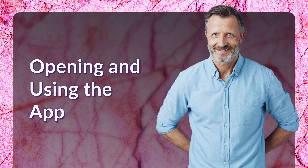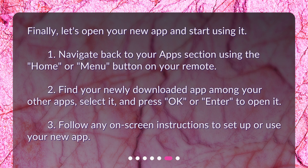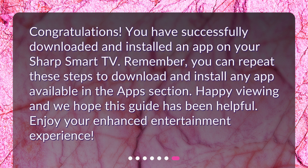Opening and using the app. Finally, let's open your new app and start using it. 1. Navigate back to your App section using the Home or Menu button on your remote. 2. Find your newly downloaded app among your other apps, select it, and press OK or Enter to open it. 3. Follow any on-screen instructions to set up or use your new app. Congratulations! You have successfully downloaded and installed an app on your Sharp Smart TV. Remember, you can repeat these steps to download and install any app available in the App section. Happy viewing and we hope this guide has been helpful. Enjoy your enhanced entertainment experience.